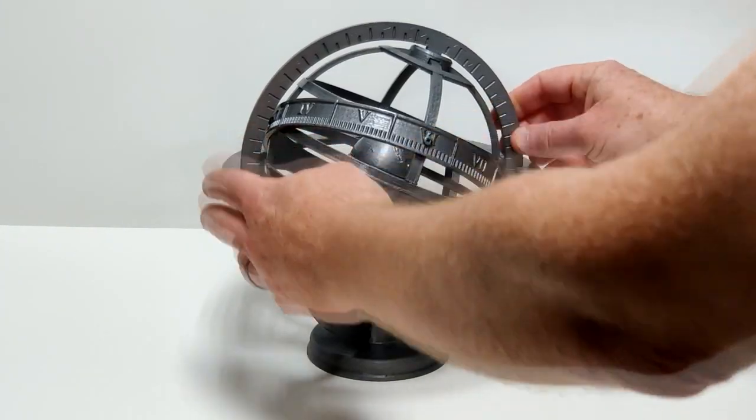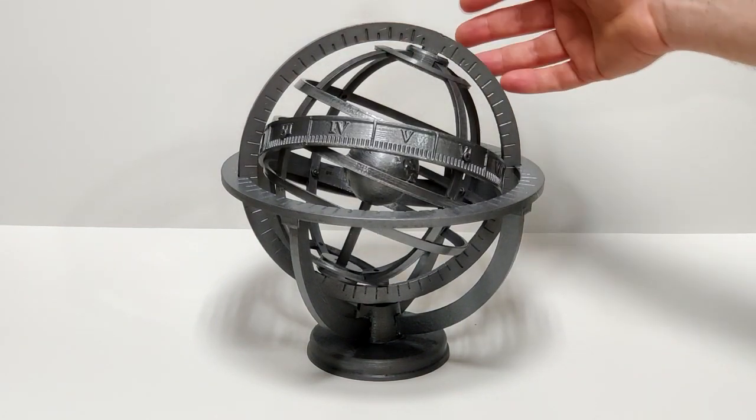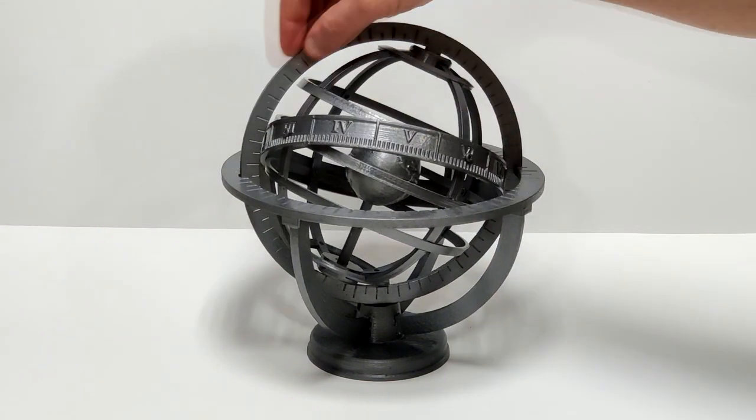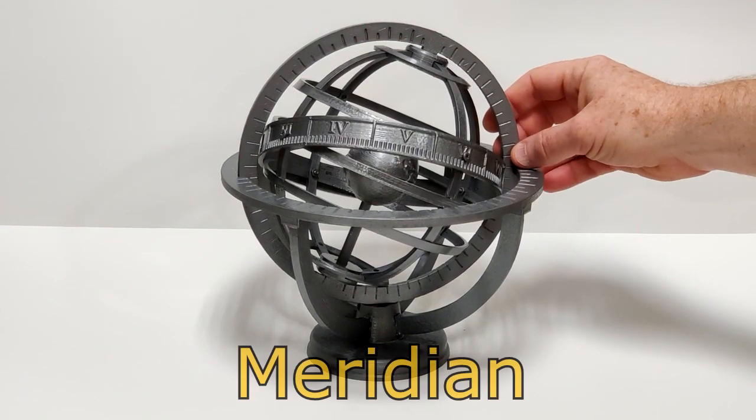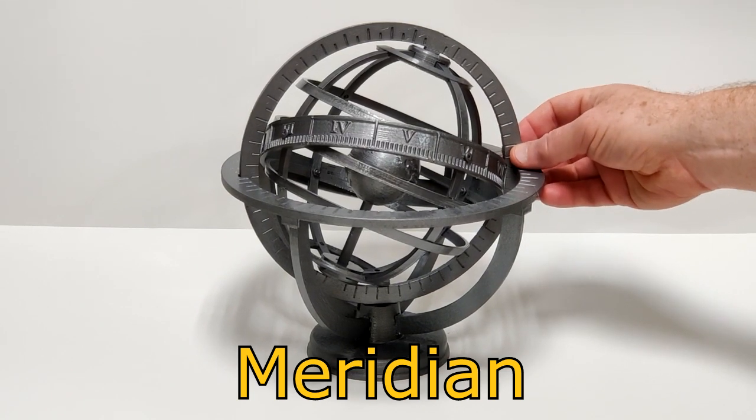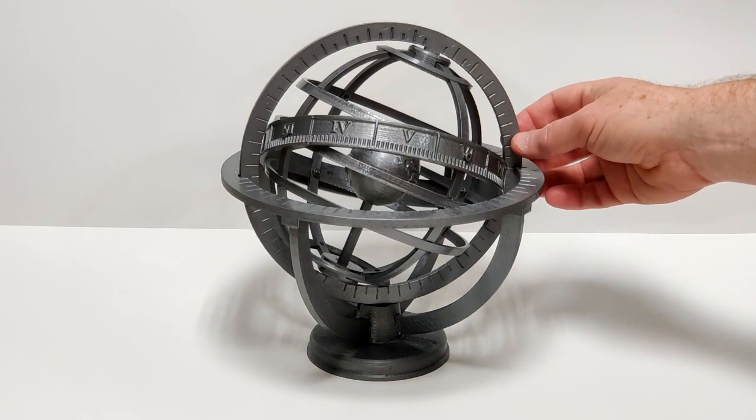Inside of the horizon rests the rest of the device. It's made up this big ring inside of it called the meridian and it represents the midpoint of the sky if you were standing in the northern hemisphere looking south or in the southern hemisphere looking due north.